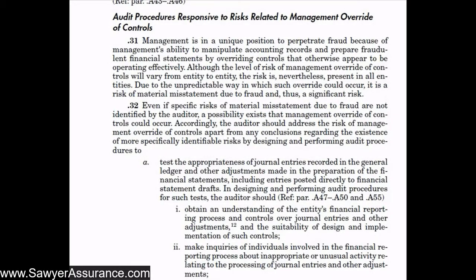Up to this point in AUC Section 240, we have gathered information from management, those charged with governance, and others within the entity regarding their policies for mitigating fraud. We've also used that information to assess the risk of material misstatement due to fraud, and discussed developing procedures to respond to those risks at the financial statement level and at the assertion level. Now we're going to dive into developing audit procedures responsive to risk related to management override of controls.